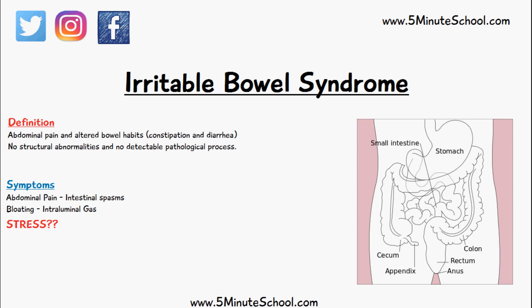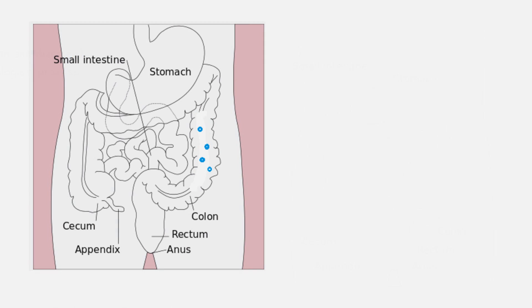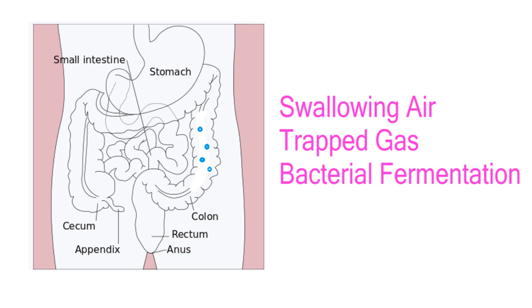That means the cause of irritable bowel syndrome is not fully understood. Symptoms include abdominal pain, largely due to intestinal spasms, and bloating due to intraluminal gas — gas present inside the lumen of the bowels. This can be caused by swallowing air, gases not diffusing properly, or fermentation of short chain carbohydrates by bacteria.